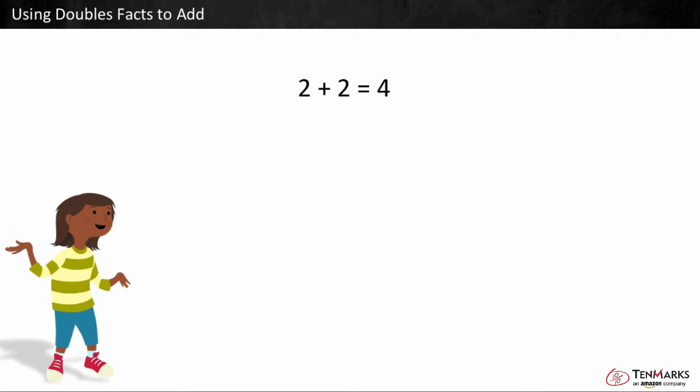For example, 2 plus 2 is equal to 4. 3 plus 3 is equal to 6. 4 plus 4 is equal to 8. 5 plus 5 is equal to 10. 6 plus 6 is equal to 12. 7 plus 7 is equal to 14. And so on.